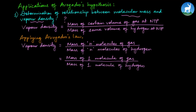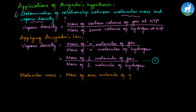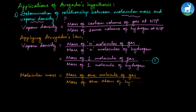Molecular mass is defined as the mass of one molecule of gas divided by the mass of one atom of hydrogen. This is the formula for molecular mass, where hydrogen mass refers to the mass of one atom. This is equation 2.